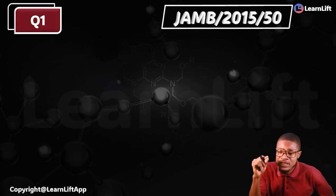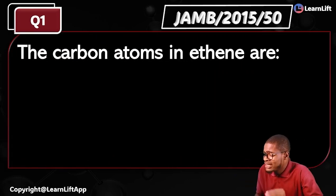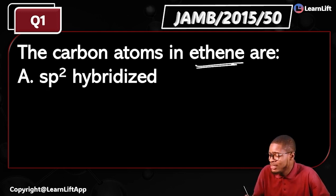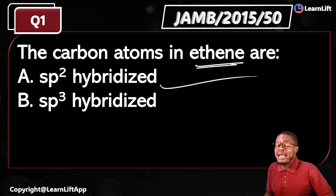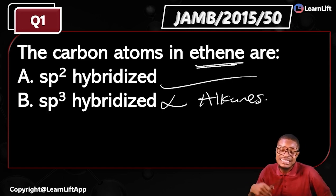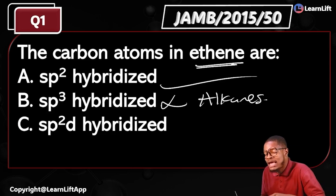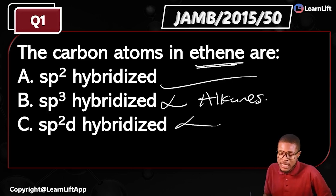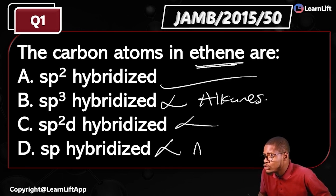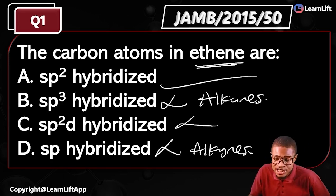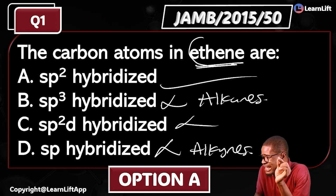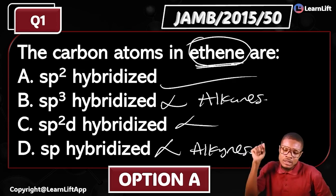Let's answer a JAMB question. JAMB 2015, question 50. They ask: the carbon atoms in ethene — what are they? Option A: they are sp2 hybridized. Option B: they are sp3 hybridized — no, sp3 is seen in your alkanes, your single bonds. Option C: sp2d hybridized — not true. Option D: sp hybridized — no, sp hybridized is seen in your alkynes, which are linear in shape — a good example is ethyne. The correct answer is option A: the carbon atoms in ethene are sp2 hybridized.